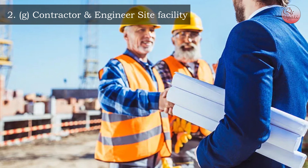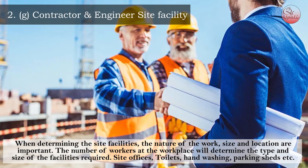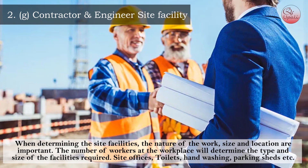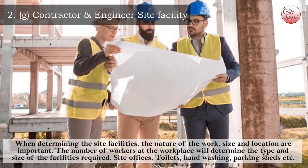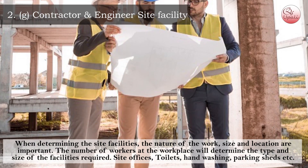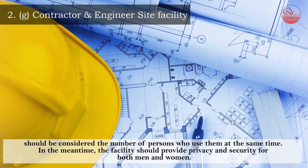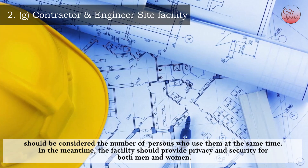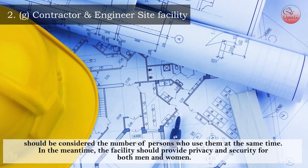G) Contractor and Engineer Site Facility. When determining the site facilities, the nature of the work, size, and location are important. The number of workers at the workplace will determine the type and size of the facilities required. Site offices, toilets, hand washing, parking sheds, etc. should be considered based on the number of persons who use them at the same time. The facility should also provide privacy and security for both men and women.